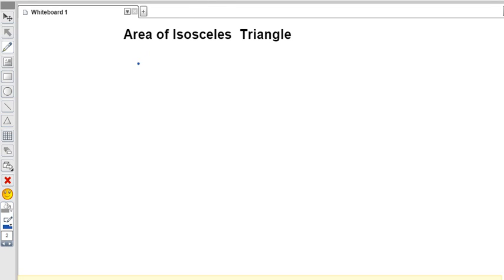Hello friends, in this video I will teach you how to find the area of an isosceles triangle. We'll find the formula for the area of an isosceles triangle. An isosceles triangle is one where two sides are equal.